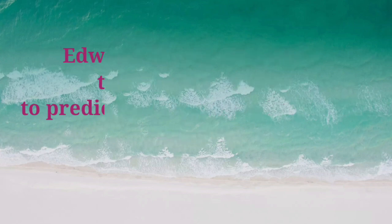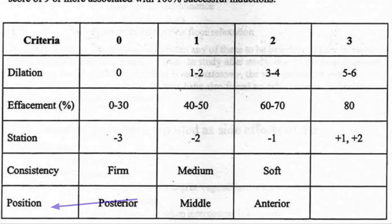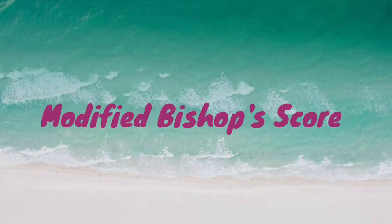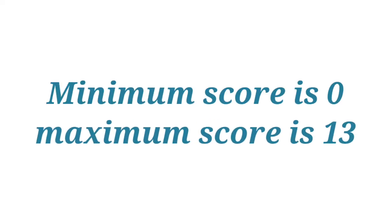The original version of the Bishop Score has five parameters: cervical dilation, cervical effacement, consistency of cervix, position of cervix, and station of the fetal head. The modified version of Bishop Score replaced effacement with cervical length. In this scoring system, the minimum score is zero and the maximum score is 13.